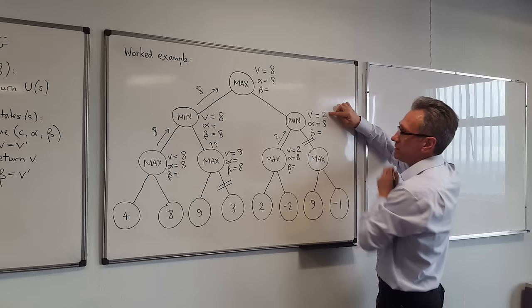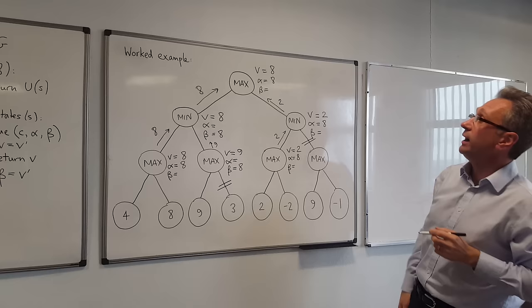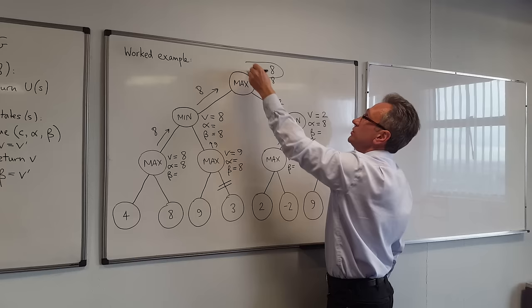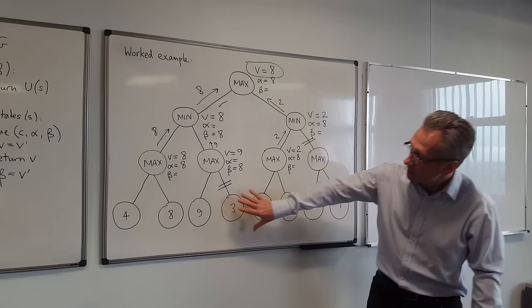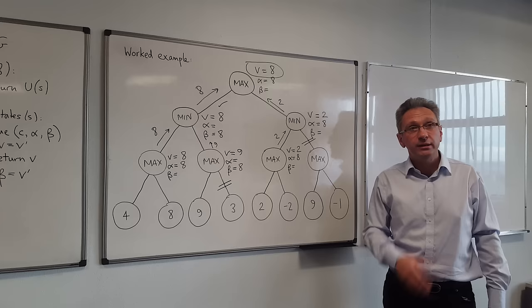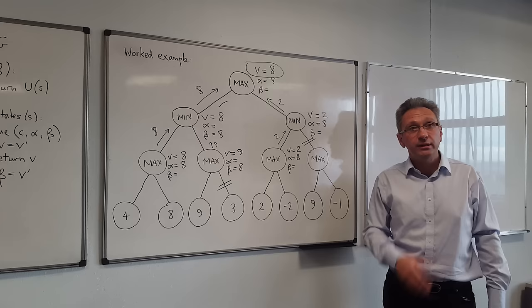The value 2 has no effect on the top level of the search. The value of the top level is 8, and this here is the correct action to take. Alpha-beta pruning allowed us to prune out a certain amount of the search space. In the assignment, I'll give you a similar example and ask you to find the pruning points.